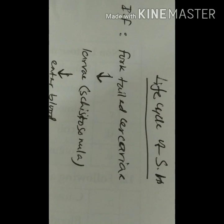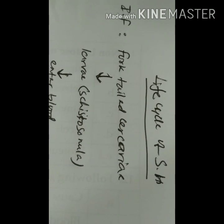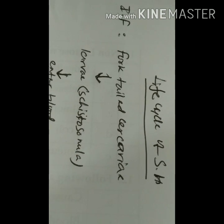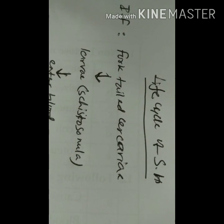The infective form for humans or vertebrates is the fork-tailed, freely swimming cercaria. Humans are infected when free-swimming fork-tailed cercaria penetrate the skin. They differentiate into larvae or young Schistosomes in the subcutaneous tissue, where they may give rise to papules or erythematous reaction due to hypersensitivity to the young larvae.